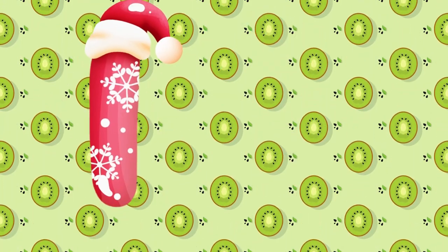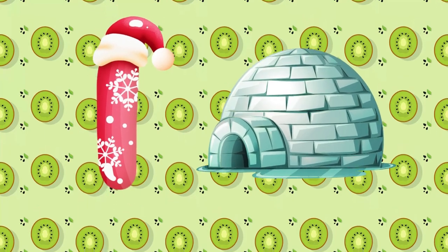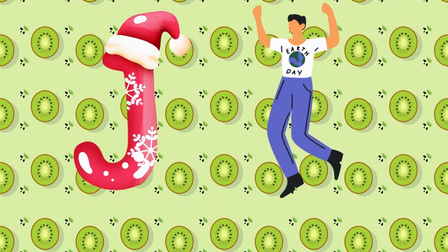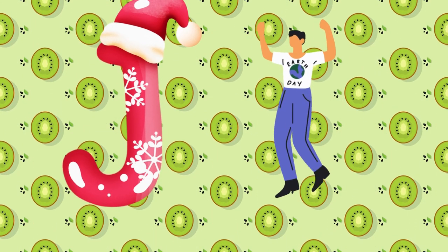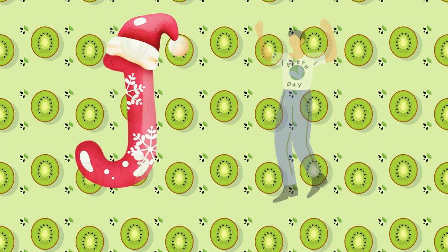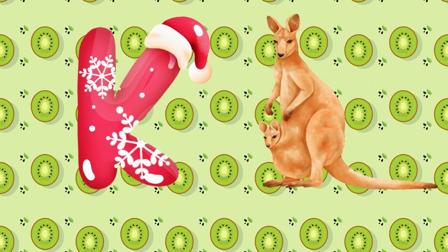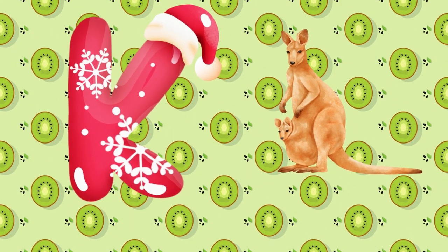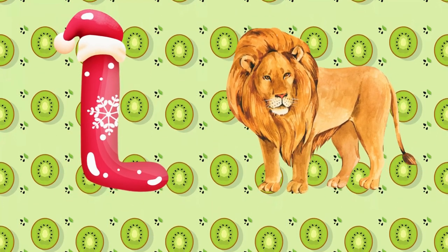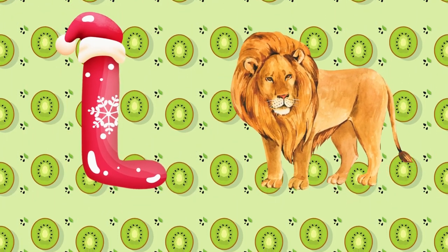I is for igloo, i-i-igloo. J is for jump, j-j-jump. K is for kangaroo, k-k-kangaroo. L is for lion, l-l-lion.